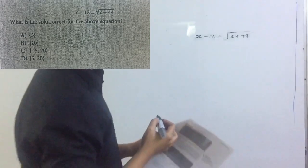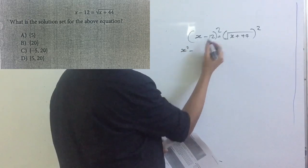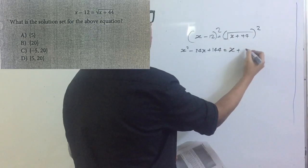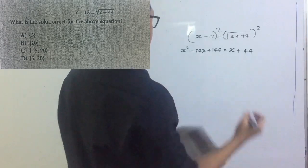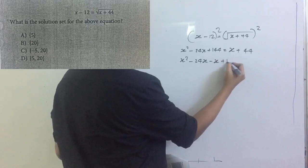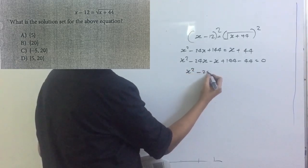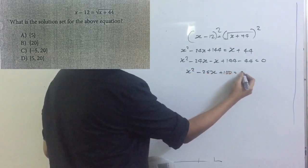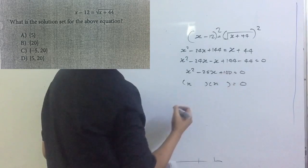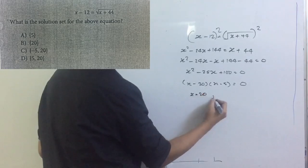So when we solve it, we are supposed to square both sides. So I'm going to do that. It will be x squared minus 24x plus 144, and then the square root will be removed — x plus 24. So it will be x squared minus 25x plus 100 equals zero. You are going to factor it — 100 is 20 times 5 — so you will get x equals 20 and x equals 5.